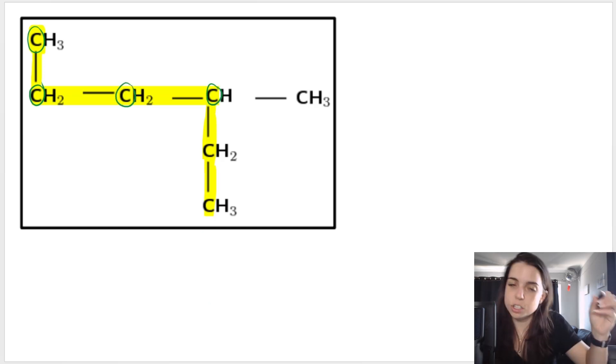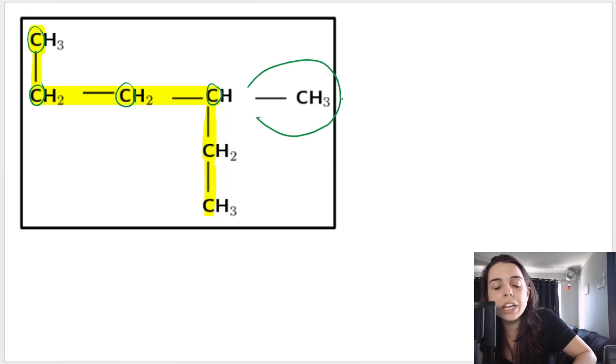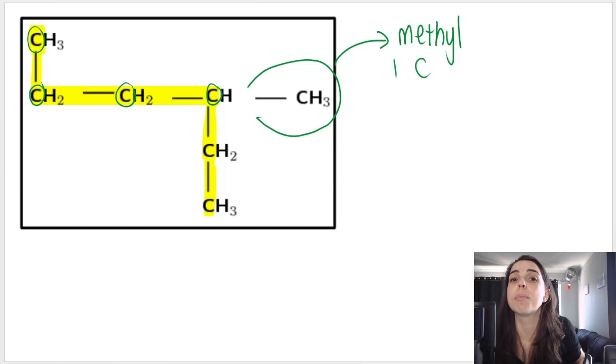What that means is once you've highlighted your longest chain, everything that is not highlighted is a branch, a substituent. In this case, it is a CH3. It is an alkyl group. And in particular, it is a methyl or methyl group. How do you know it's a methyl group? Because it's got one carbon in the branch.